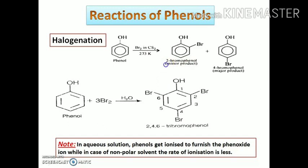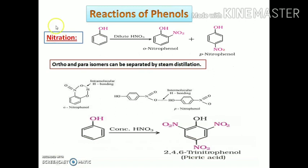The next electrophilic substitution reaction of phenols is nitration. Depending upon the nature of the nitrating agent, different products are obtained. With dilute nitric acid (10–20% sulfuric acid dissolved in 90% water), ortho and para nitrophenols are formed. On the other hand, if phenol reacts with concentrated nitric acid, it forms 2,4,6-trinitrophenol, also known as picric acid.